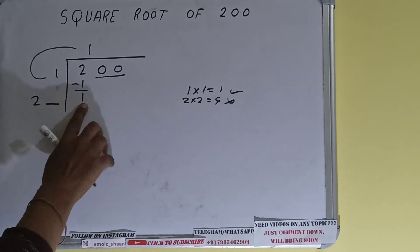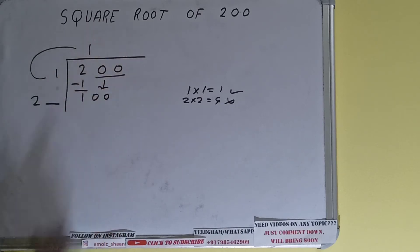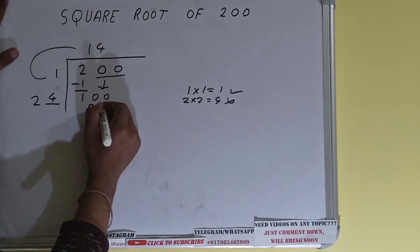We need to make this number big so that we can divide. Bring the next pair down and the number will become 100. Now the rule is whatever number we use here we have to use here also. So four will work. Four here and four here will give 96. Subtract it, we'll be left with four.